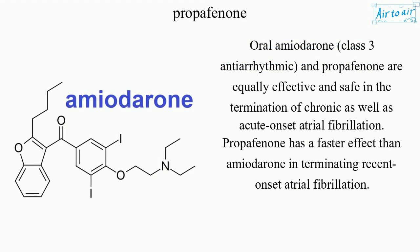Oral amiodarone, a class 3 antiarrhythmic, and propafenone are equally effective and safe in the termination of chronic as well as acute onset atrial fibrillation. Propafenone has a faster effect than amiodarone in terminating recent onset atrial fibrillation.